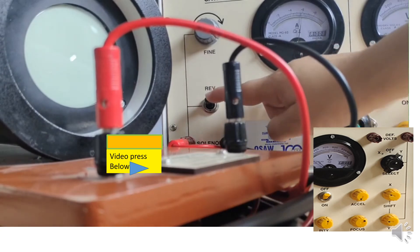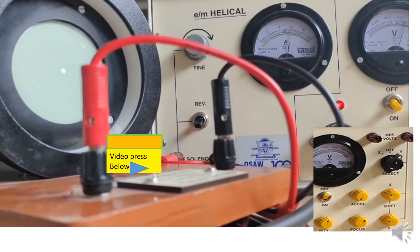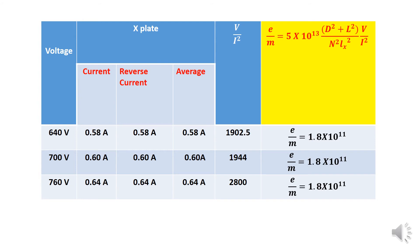We reverse the current and measure that reading too — that completes one full reading at a given voltage. These are the calculations: the voltages used are 640, 700, and 760, with x plate selected. The forward and reverse current values are noted, and the averages are taken — for example, 58, 58, 60, 60, and 64, 64. The v by i ratio is then calculated from these values for use in the formula.